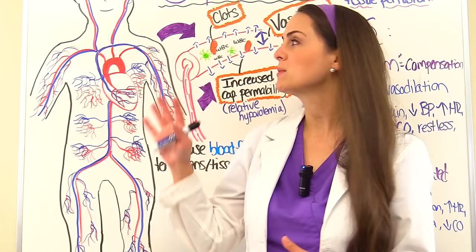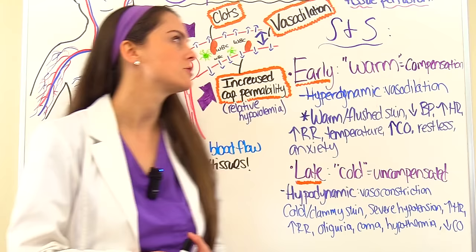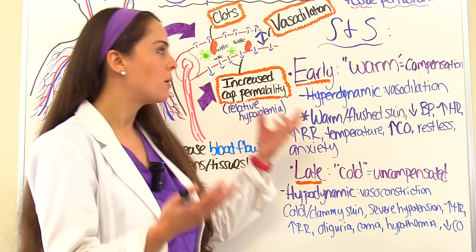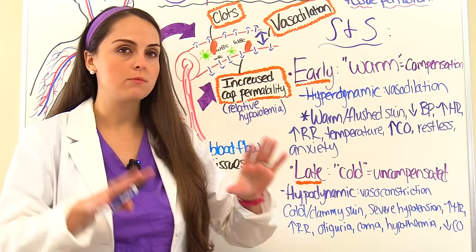Septic shock is a little different from other types of shock in its stages because of the massive vasodilation. The early signs and symptoms are sometimes referred to as the warm stage of septic shock — this is where compensation is occurring and the patient is in a hyperdynamic state due to vasodilation. You will see warm, flushed skin.